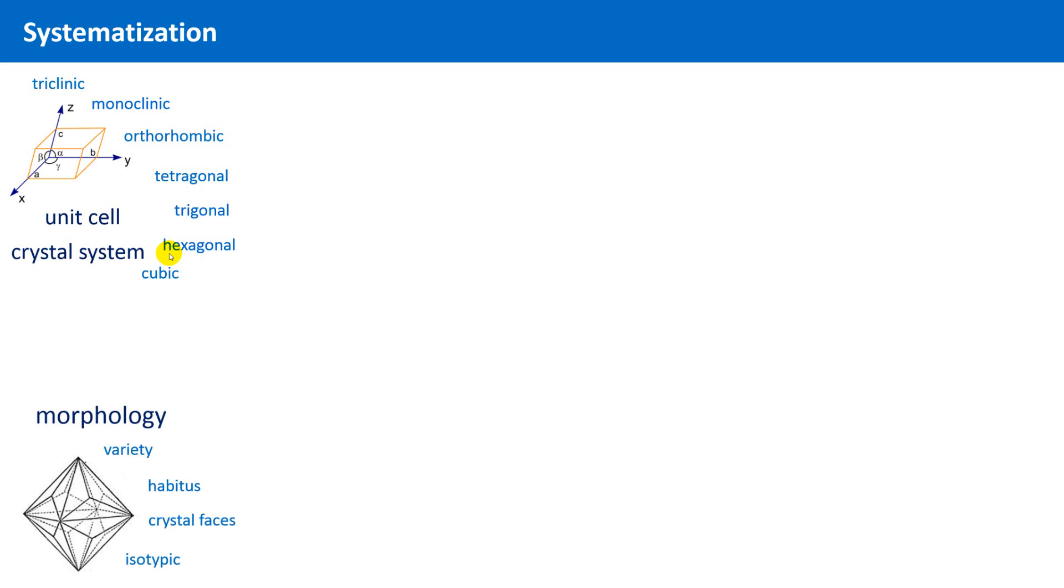You will learn how the outer shape of crystals can be described. This is the area of morphology. Morphology is Greek and means simply study of shape. In this context, the so-called Miller indices play a role, which are a sort of orientation guide, something like a street map, but through crystals. We will address this topic too, but only shortly.